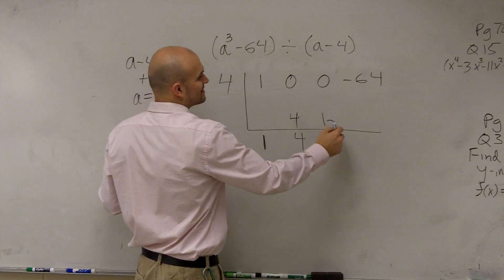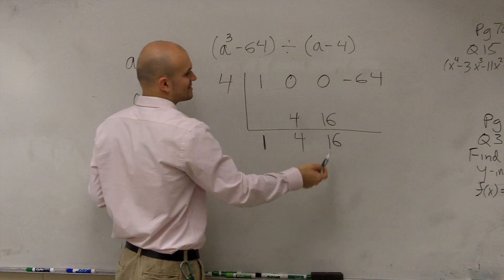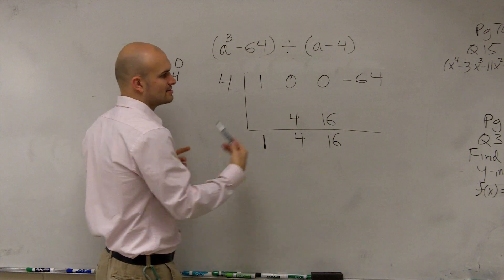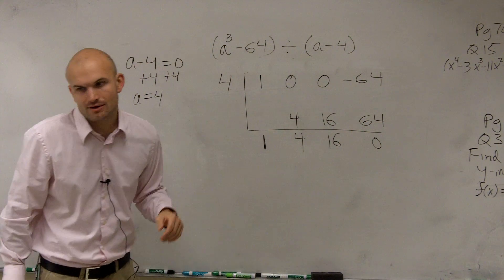4 times 4 is 16. 0 plus 16 is 16. 16 times 4 is positive 64. Then we have 0.